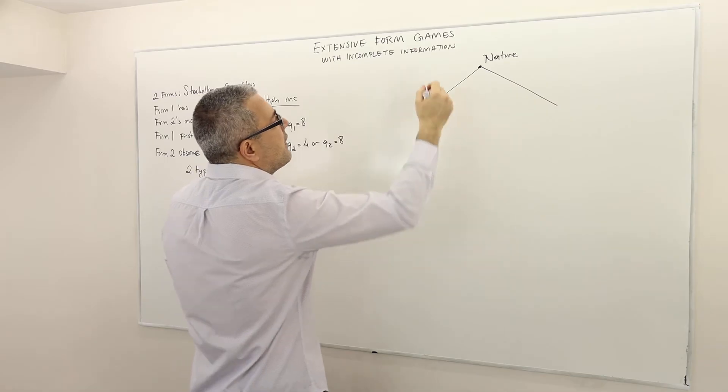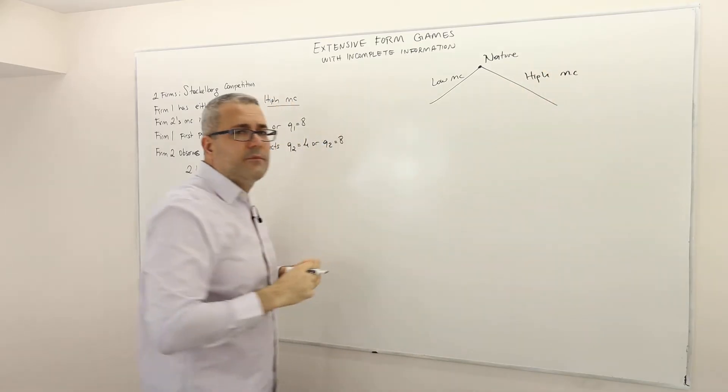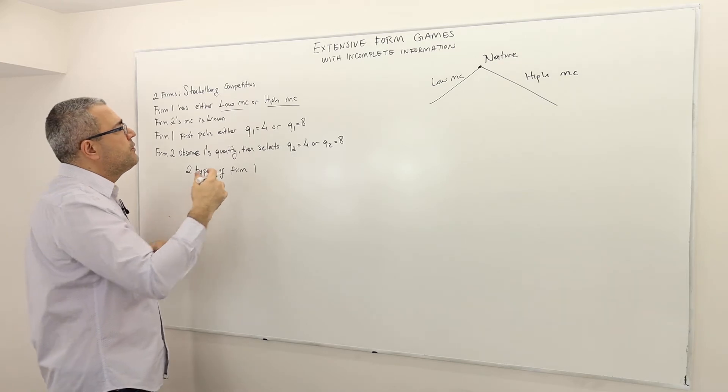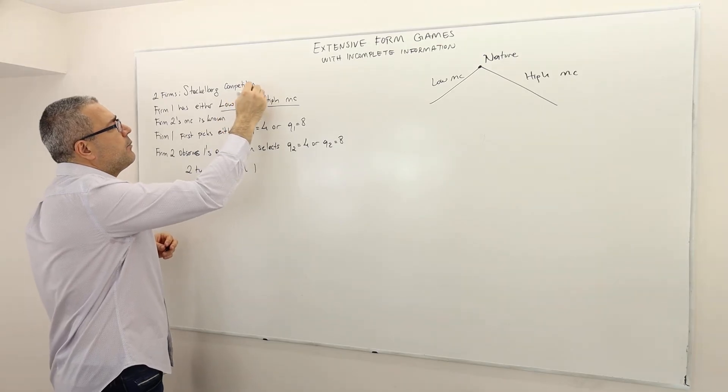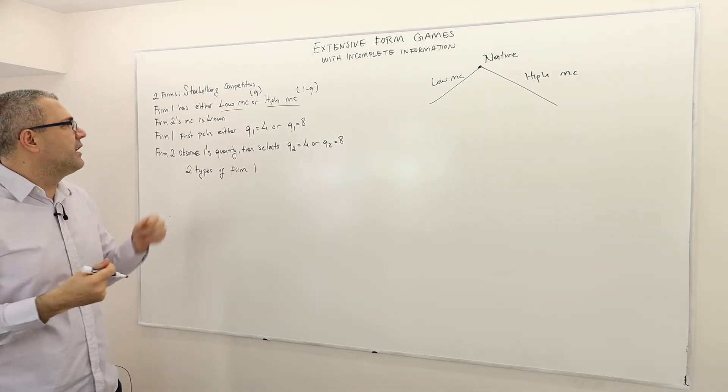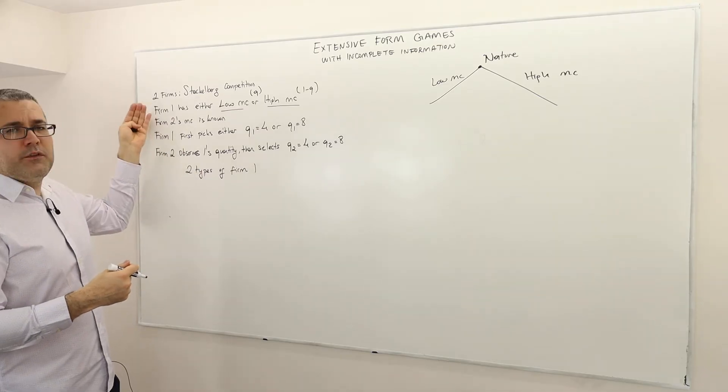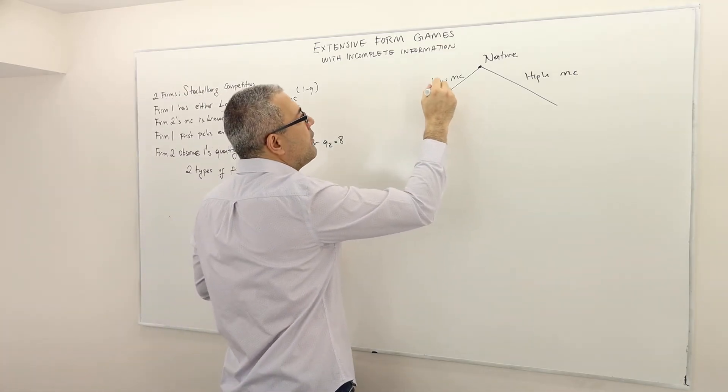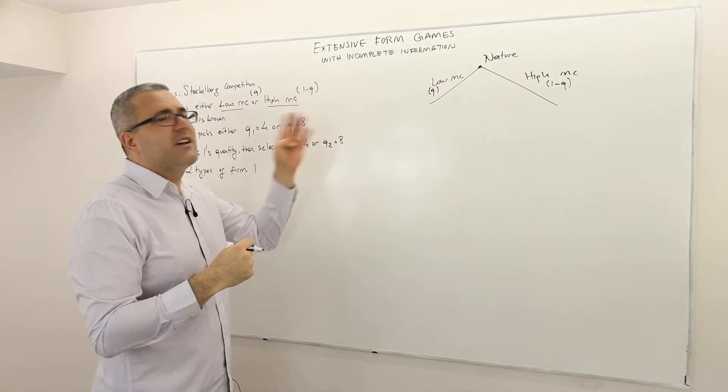So nature determines the type of firm 1 we say. As we said it's either low marginal cost or high marginal cost. We also assume that firm 2 believes that firm 1 has low marginal cost with some probability q and high marginal cost with some probability 1 minus q. So we assume that firm 2 has this explicit belief and we assume that both firm 1 and obviously firm 2 knows about this belief. You may want to put those beliefs here as well.